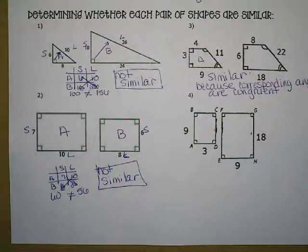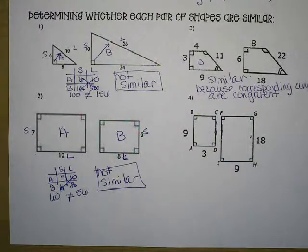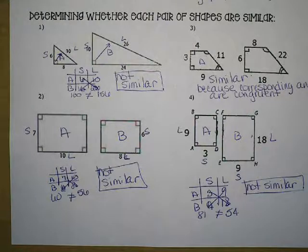This will not hold true on all shapes. Because not all rectangles are similar. Although they do all have equal angles, not all rectangles are similar. Why don't you try number 4 by yourself and see what you can figure out. This is a perfect example of how not all rectangles are similar. Even though all the angles are the same, it is not similar shapes. I set up my ratio for rectangle A, 3 to 9, rectangle B, 9 to 18. Cross multiply, I got 81 and 54. Since those are not equal, these rectangles are not similar.